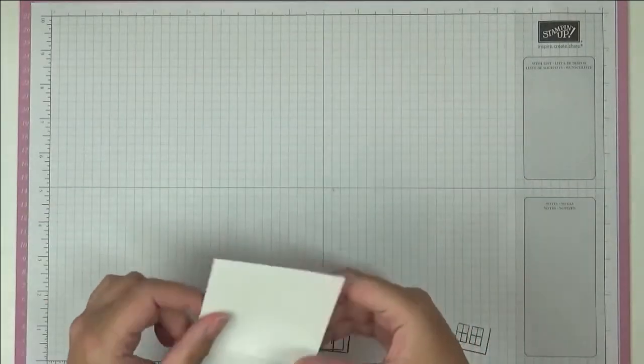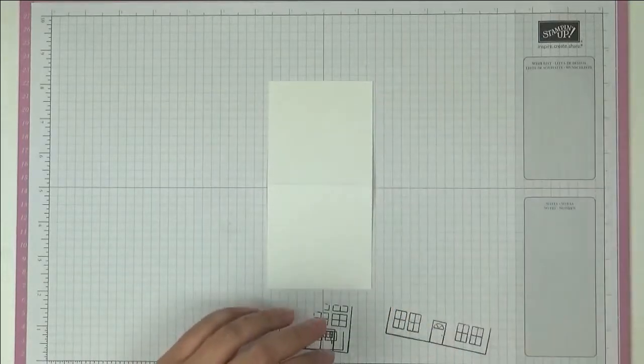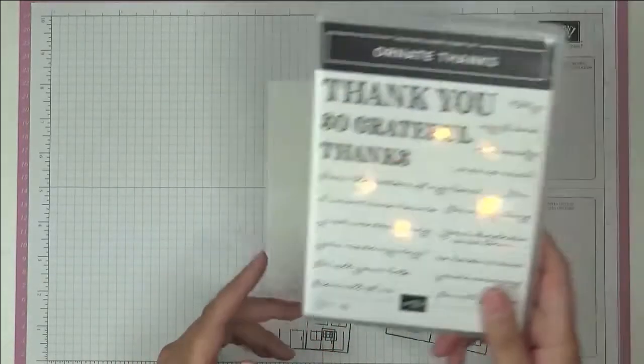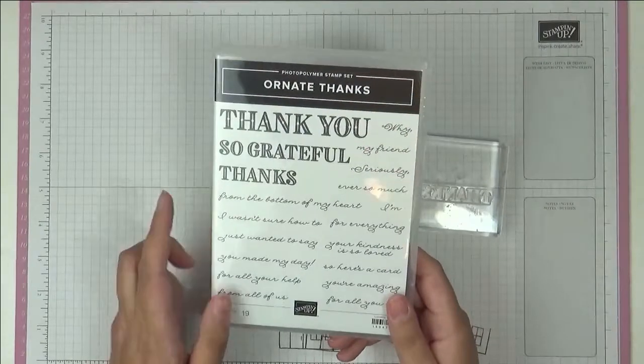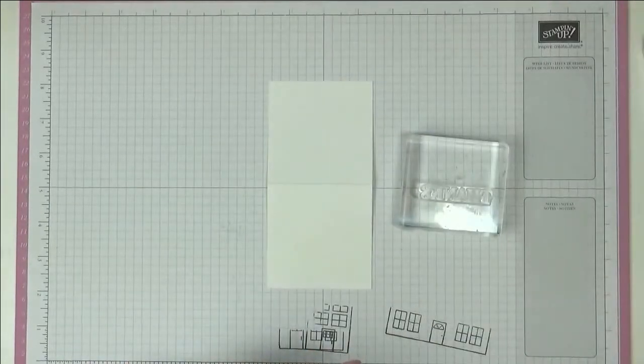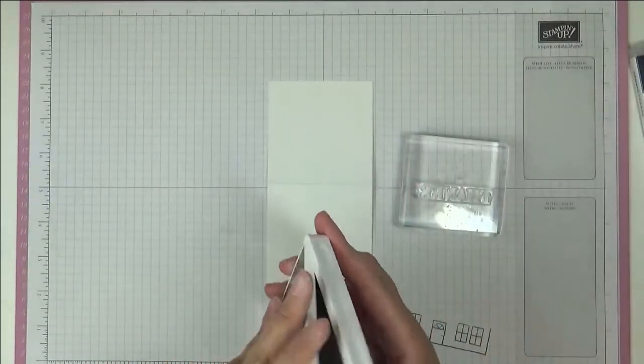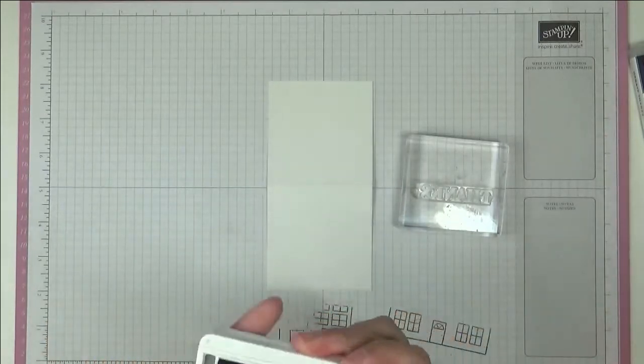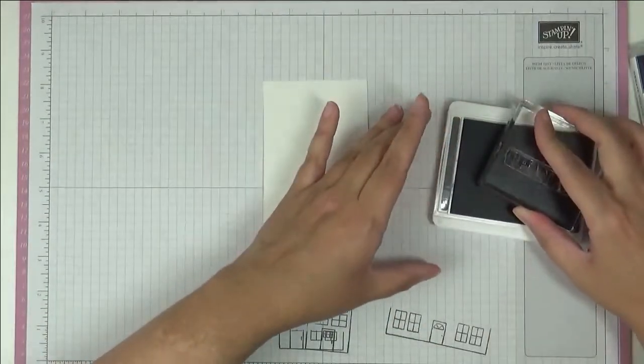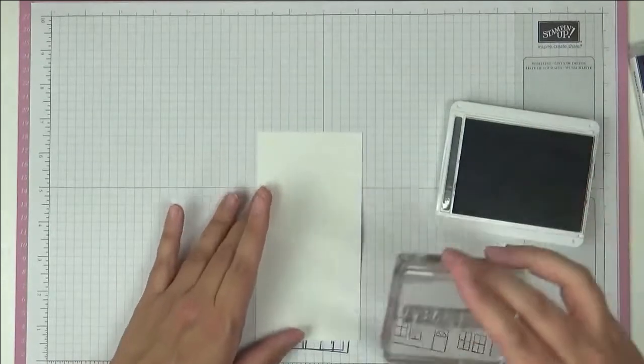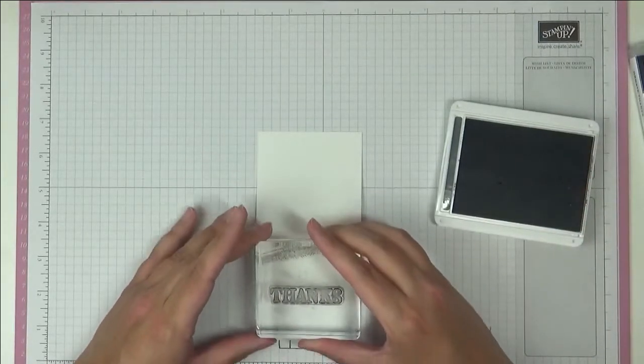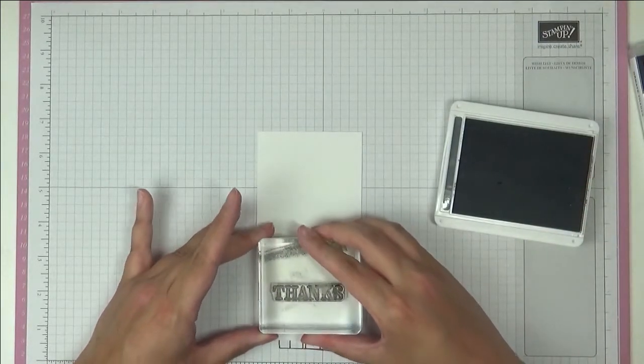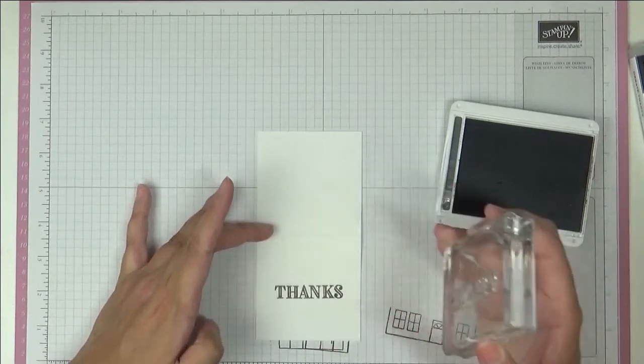I'm going to start with some stamping. I've got here a scrap of Whisper White and the stamp set I'm going to use is this one called Ornate Thanks, so I'm going to use the thanks sentiment. I'm going to be stamping it in Basic Grey. Whoops! Just ink that up nicely and then stamp that somewhere in the center like that.